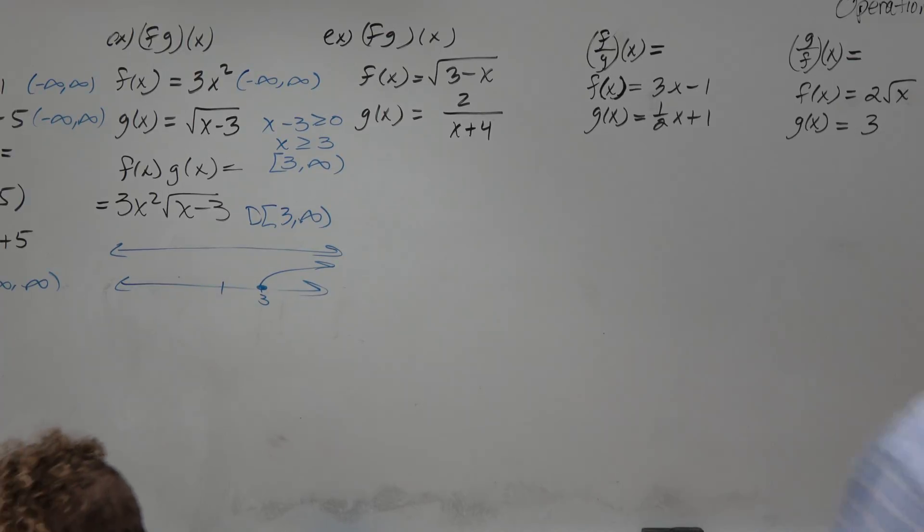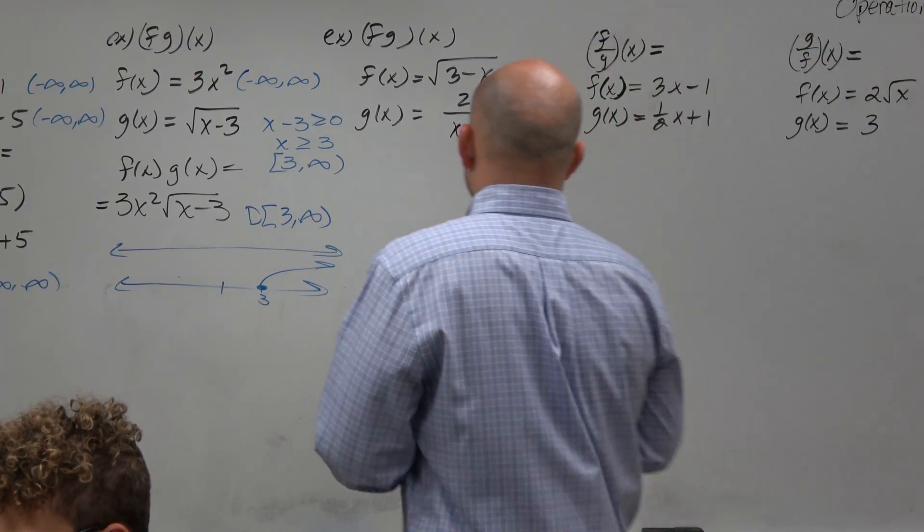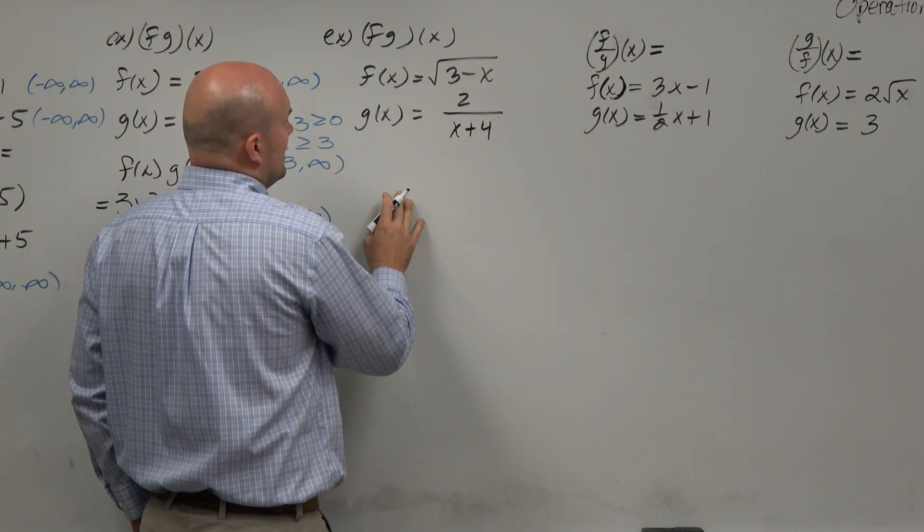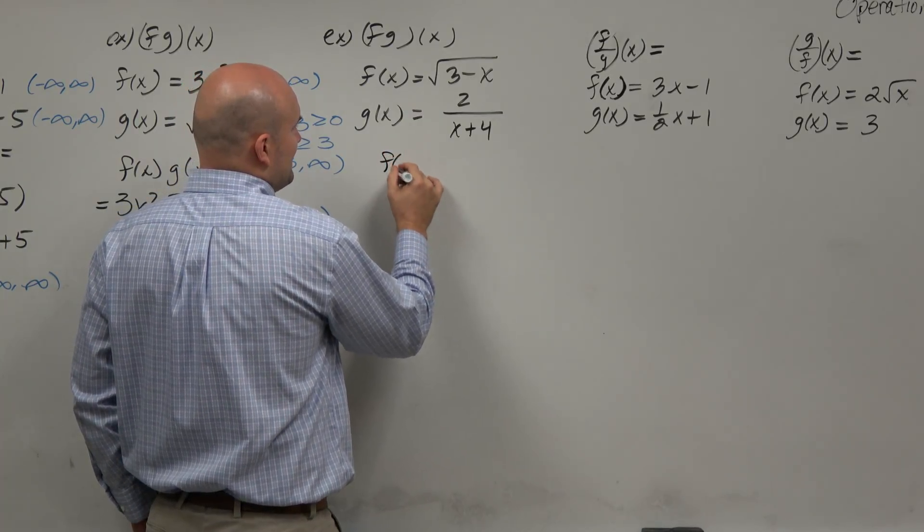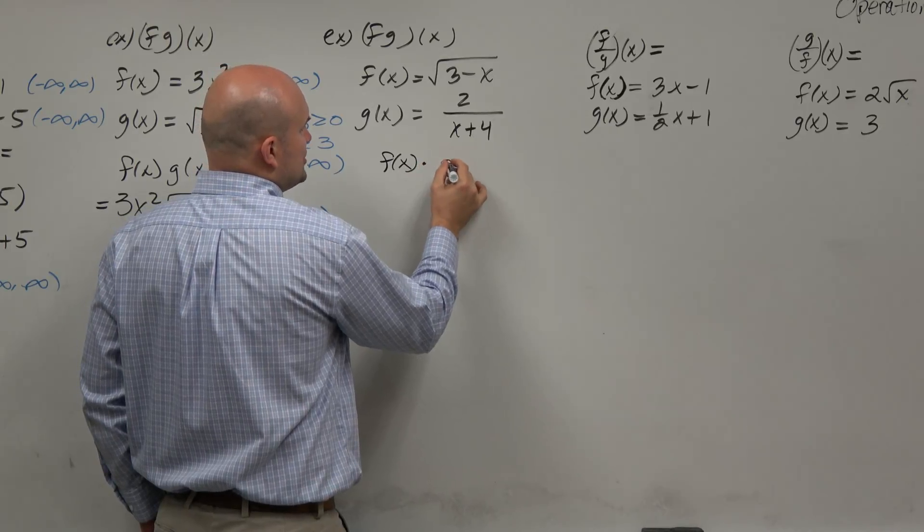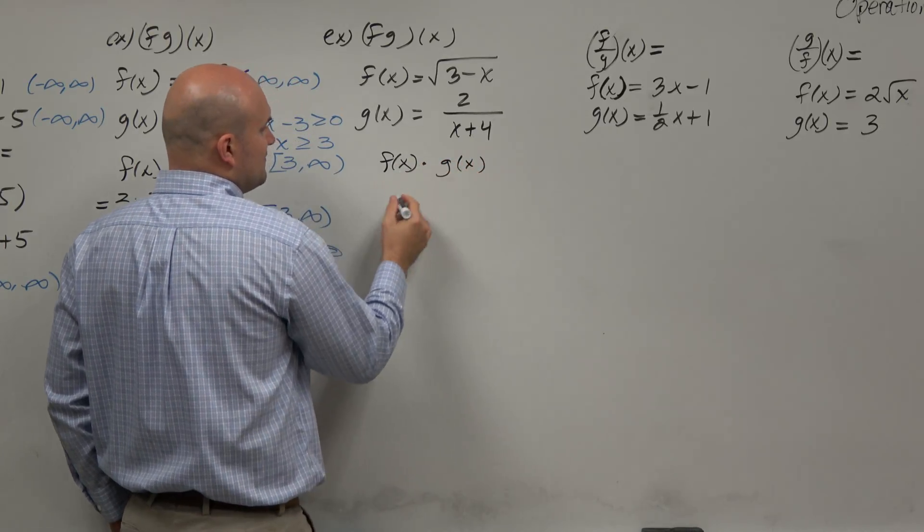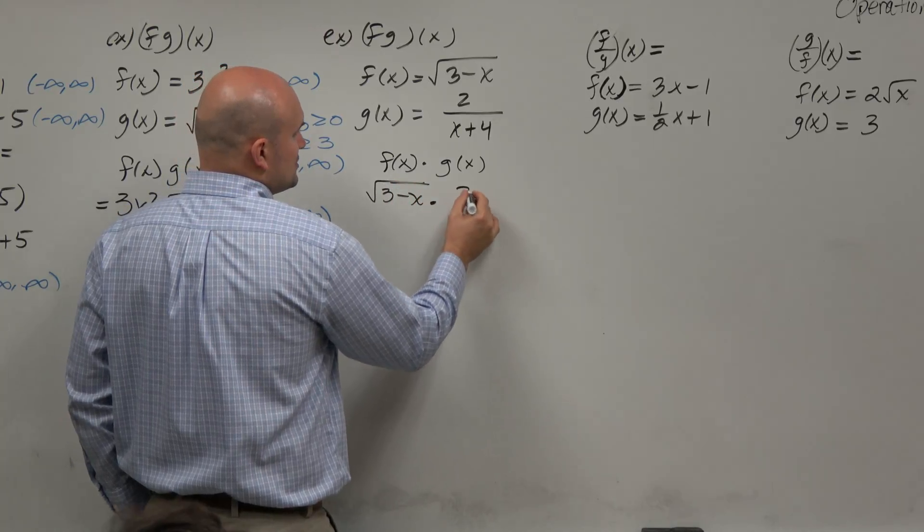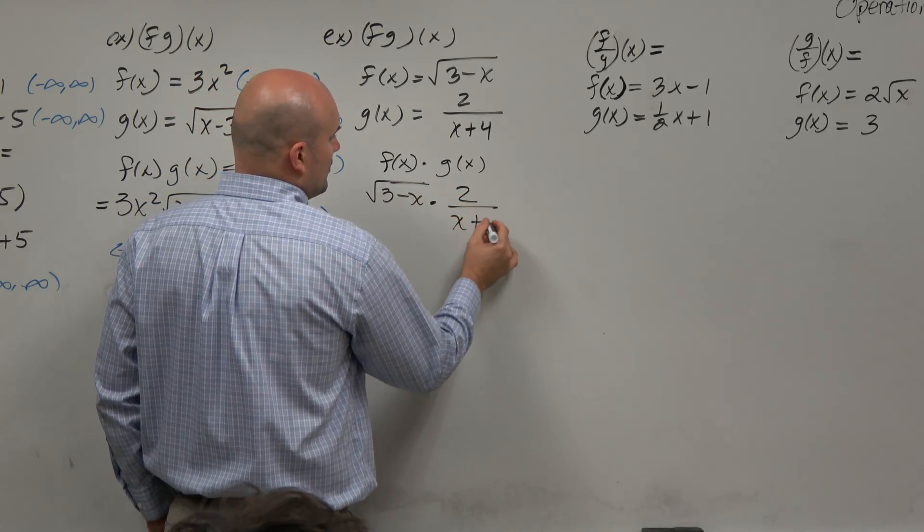Using that same thinking to do this. Now, I love this problem. This is again a multiplication problem. So basically, what we're doing is we're taking f(x) and we're multiplying it by g(x). So we have f(x) = square root of 3 minus x times 2 over x plus 4.